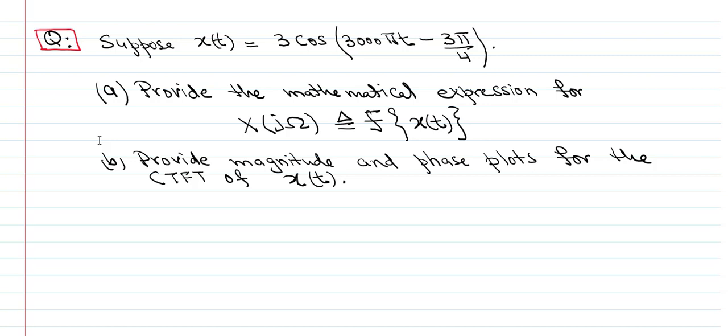The purpose of this video is to brush up on some concepts related to the continuous time Fourier transform and cosine or sine signals that you might have seen in the linear systems class. We are given an x(t) which is a pure cosine with a frequency of 3000π radians per second and a phase shift of 3π/4, and the first question is: what is the Fourier transform of this?